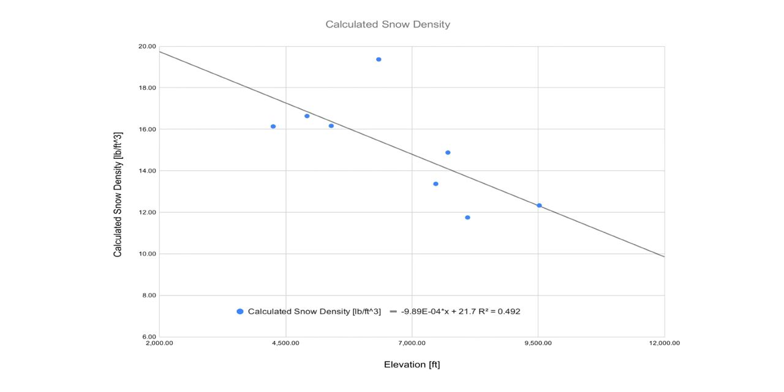So you got both the snow depth and the snow water equivalent. And with that snow depth and snow water equivalent, you calculated the value of snow density in pounds per cubic feet, which is shown here on the y axis. And you also grabbed the elevation of the snow tell site that you got that data from. And that's what's plotted here on the x axis.